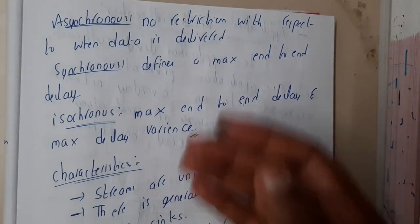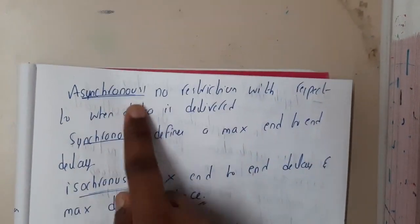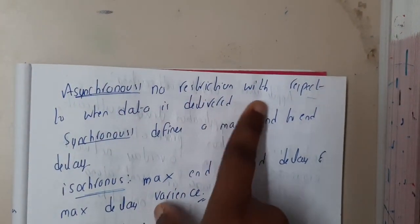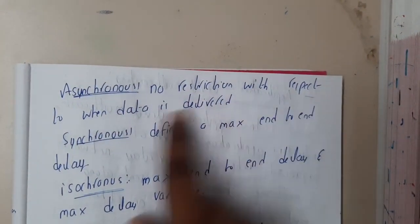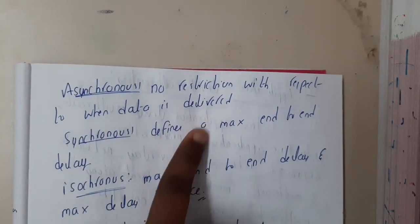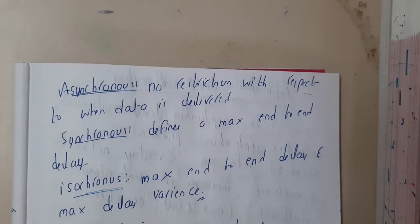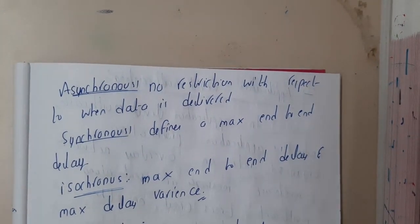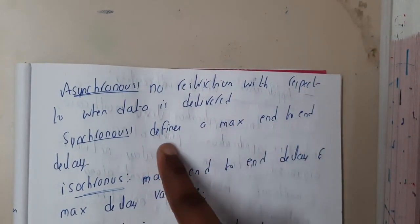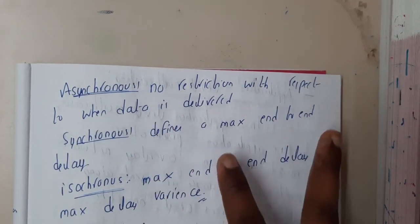Streams can be further classified into three types: asynchronous, synchronous, and isochronous. In asynchronous, there is no restriction with respect to when data is delivered — basically no delays, so whenever data is available you can send it.